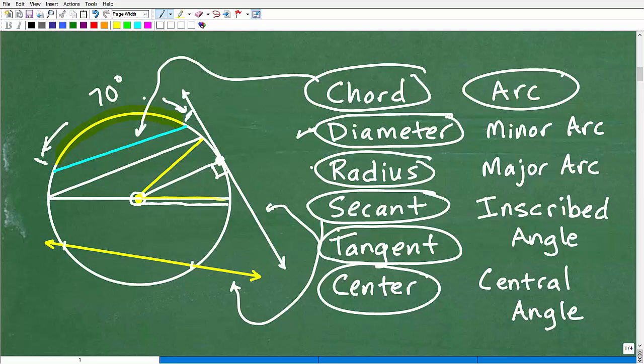Now, being that we're talking about the entire circle all the way around, one term I do not have on here that some of you may be familiar with and should be familiar with is the circumference. So the circumference is the distance around the circle. So it's kind of like the perimeter of the circle. But that's a good one to have. So that is the circumference.